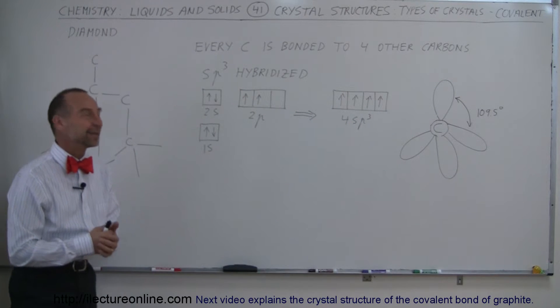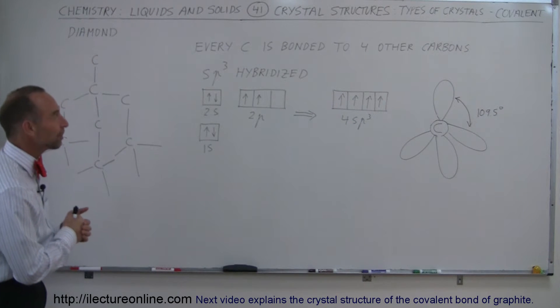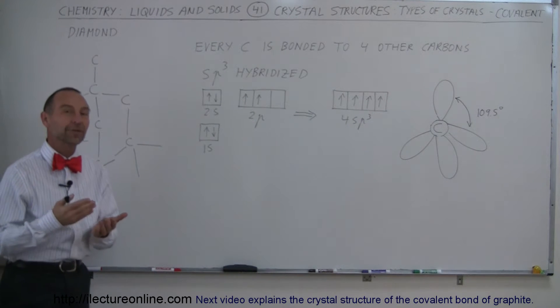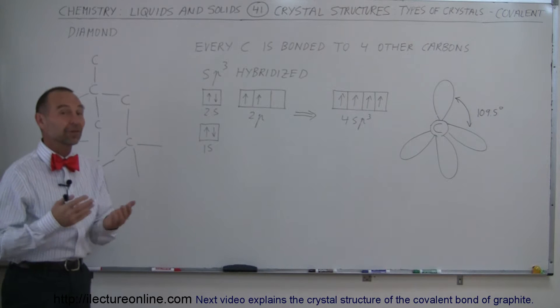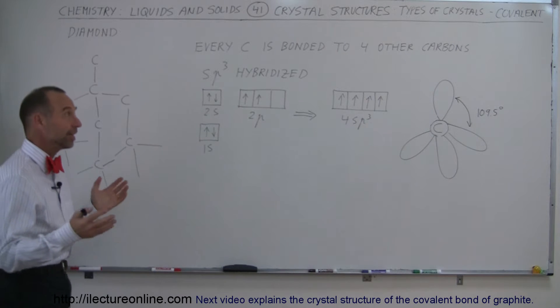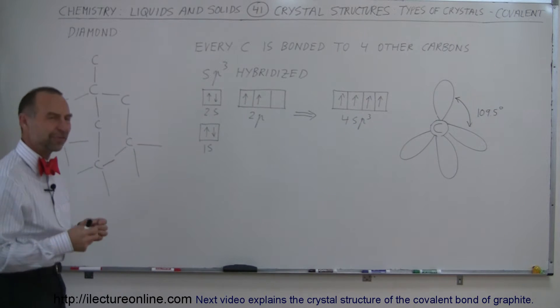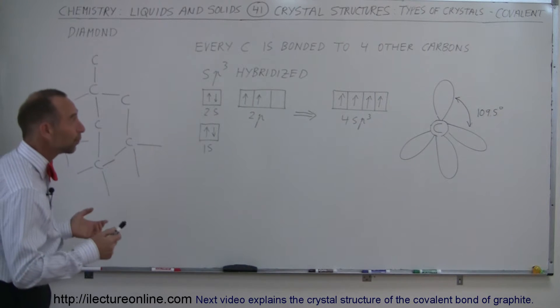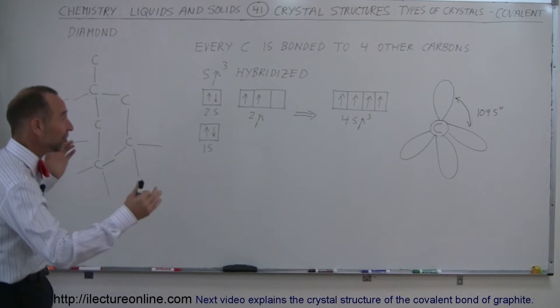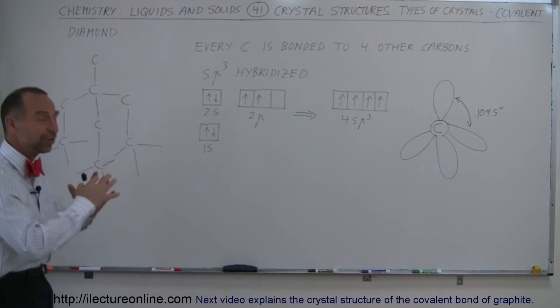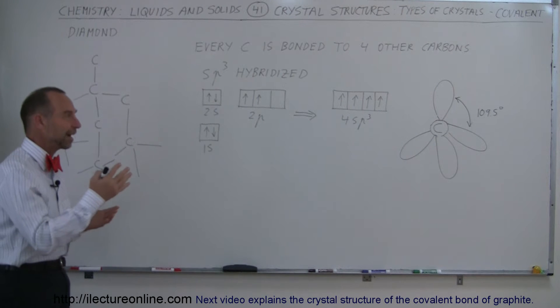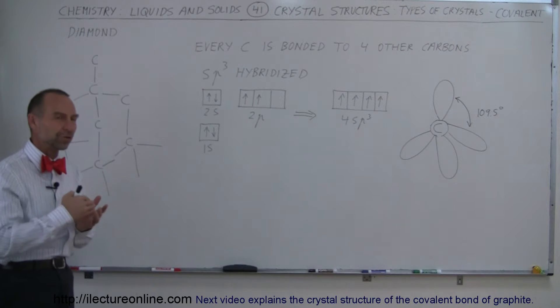Welcome to Electron Line. We're going to talk about the crystalline structure of diamond. Diamond, of course, is a very precious thing to most people, but what it really is is just carbon pushed together, pressed together under very high temperature and pressure.